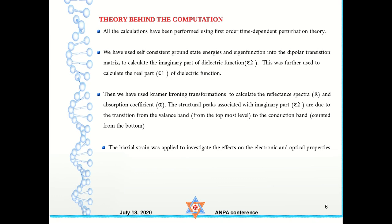For the optical properties calculation, this code uses first-order time-dependent perturbation theory. We use self-consistent ground-state energy to find the imaginary part of the dielectric function epsilon-2, and further use it to find epsilon-1. It then applies Kramers-Kronig summation to find other parameters like the reflectance spectra, absorption coefficient, and more.